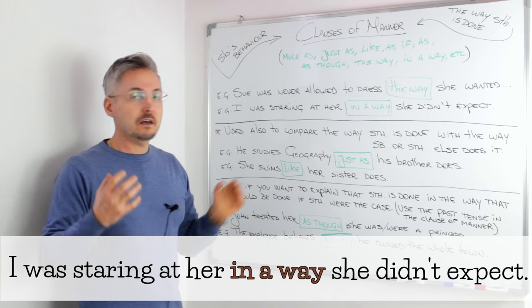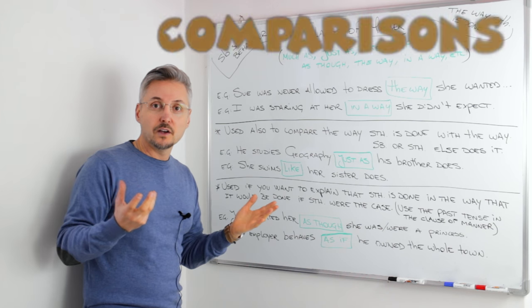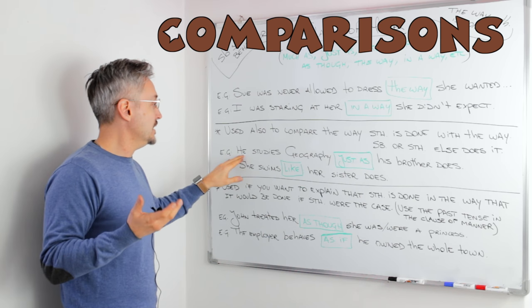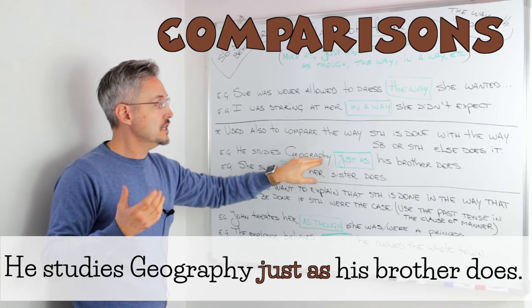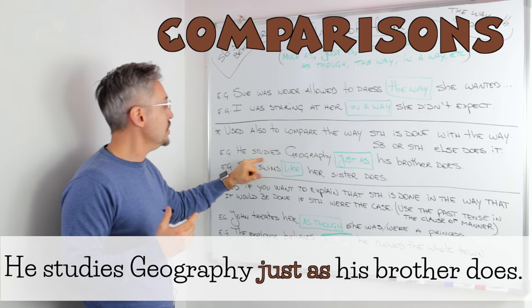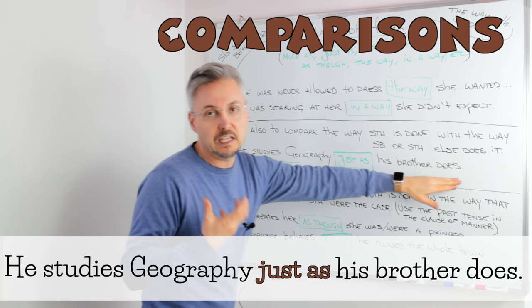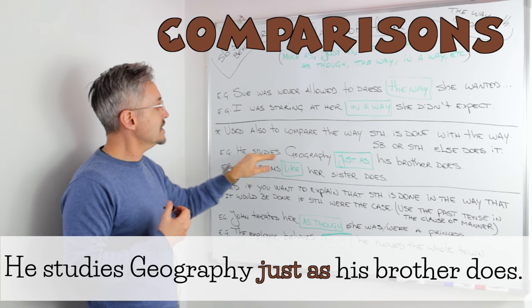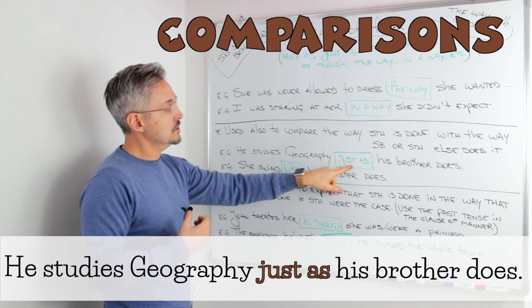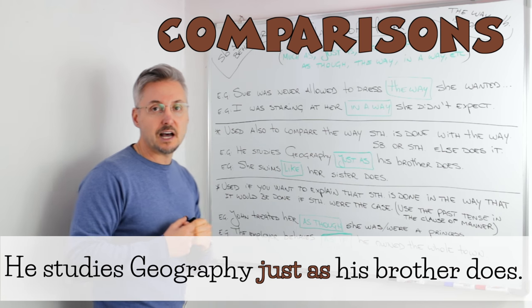If we use these clauses of manner to compare two clauses, we can say, for example, he studies geography just as his brother does. Remember that we don't need to repeat the verb in this case because it's not needed. It's the same. So, just as is used to compare the way something is done here.